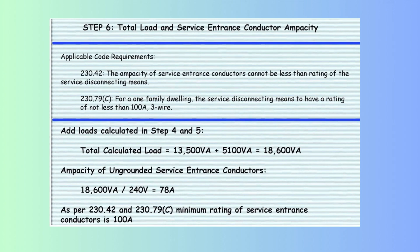Step 6 determines the total load and the ampacity of the service entrance conductors. Total load: 13,500 VA (Step 5) + 5,100 VA (Step 4) = 18,600 volt-amperes. Ampacity of service entrance conductors: 18,600 VA ÷ 240 V = 78 amperes. Per Section 230.42, service entrance conductor ampacity cannot be less than the service disconnecting means rating. Per Section 230.79(C), for a single-family dwelling, the service disconnect must have a minimum rating of 100 amperes; therefore, service entrance conductors must be rated at least 100 amperes.